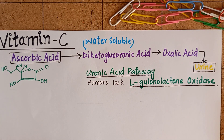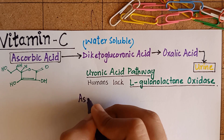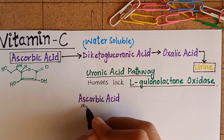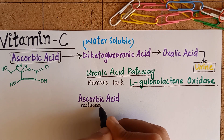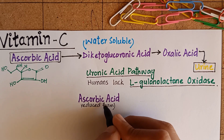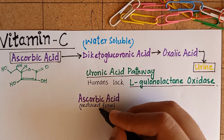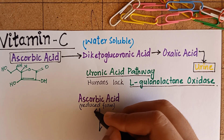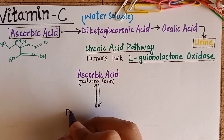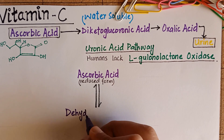The most important property of vitamin C is as a reducing agent, where it can undergo reversible oxidation and reduction to form dehydroascorbic acid.